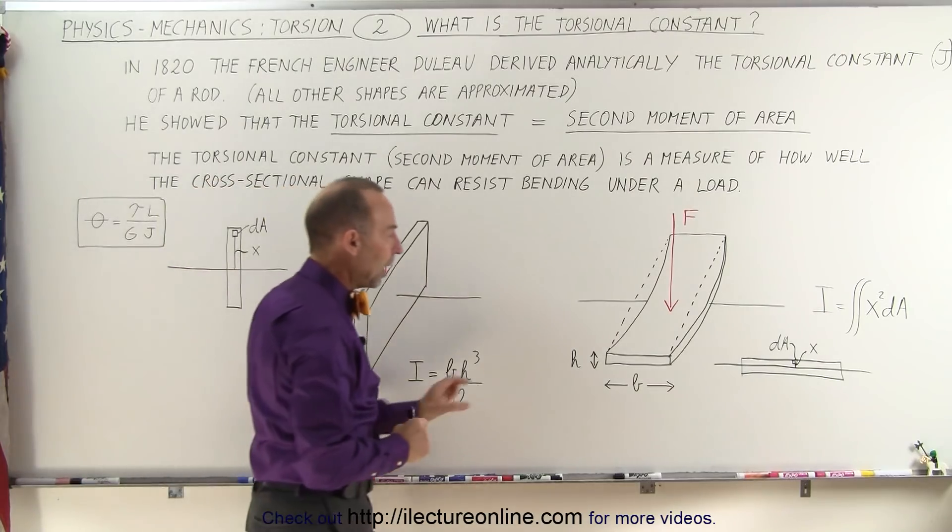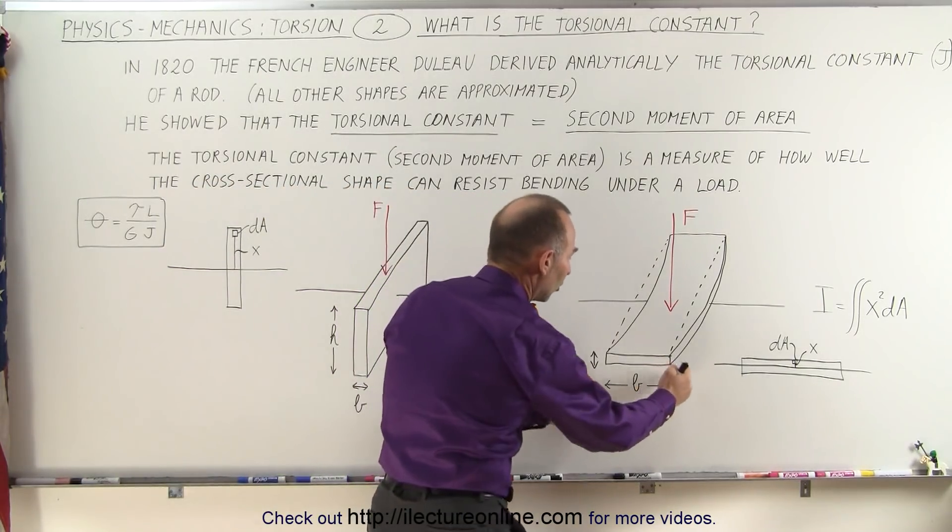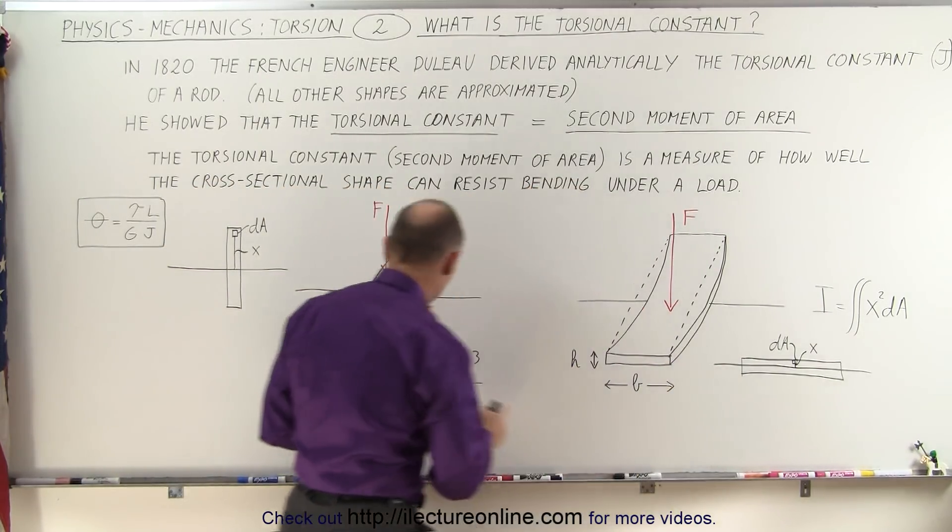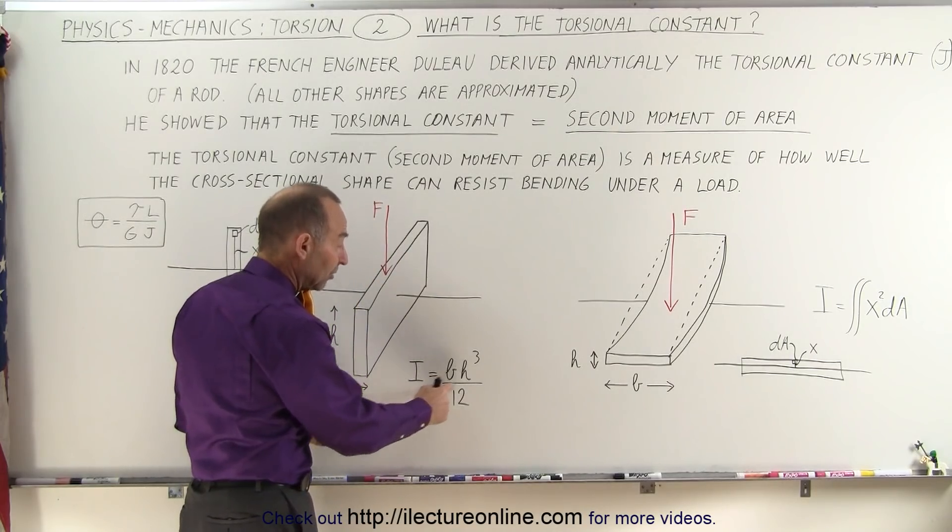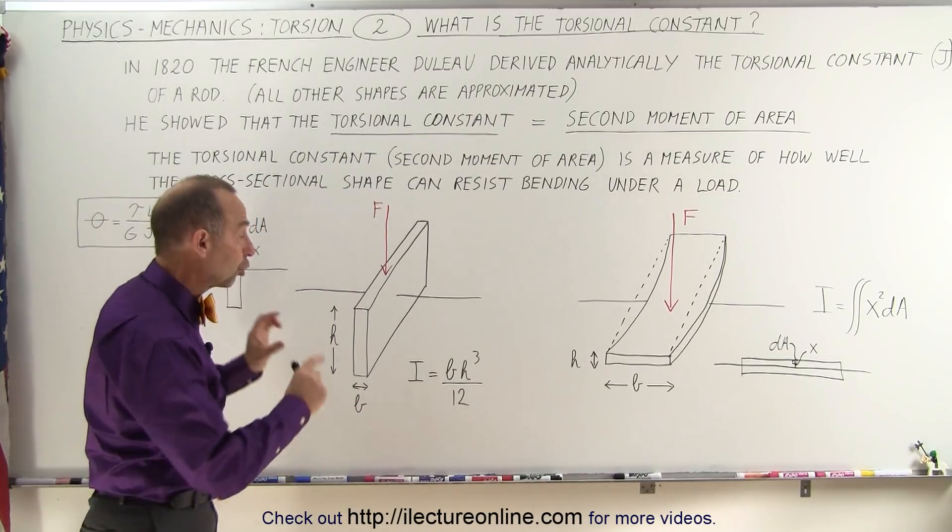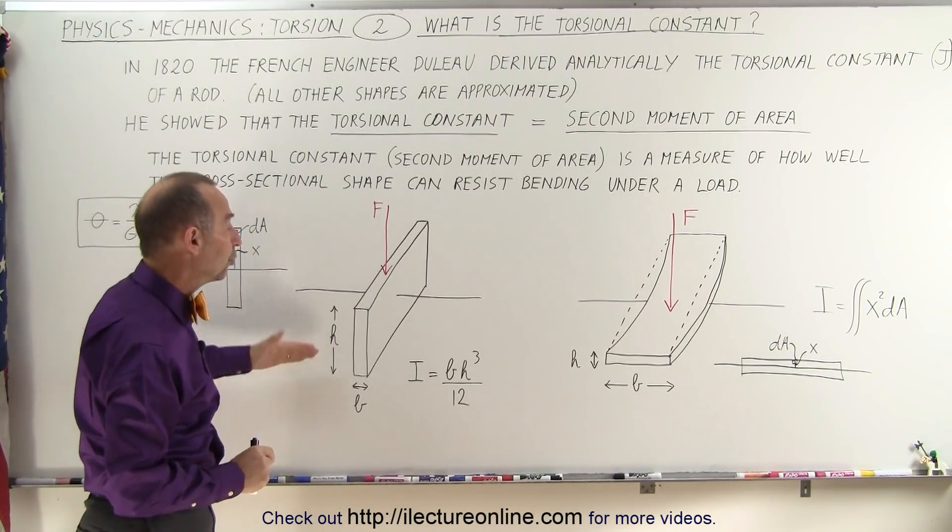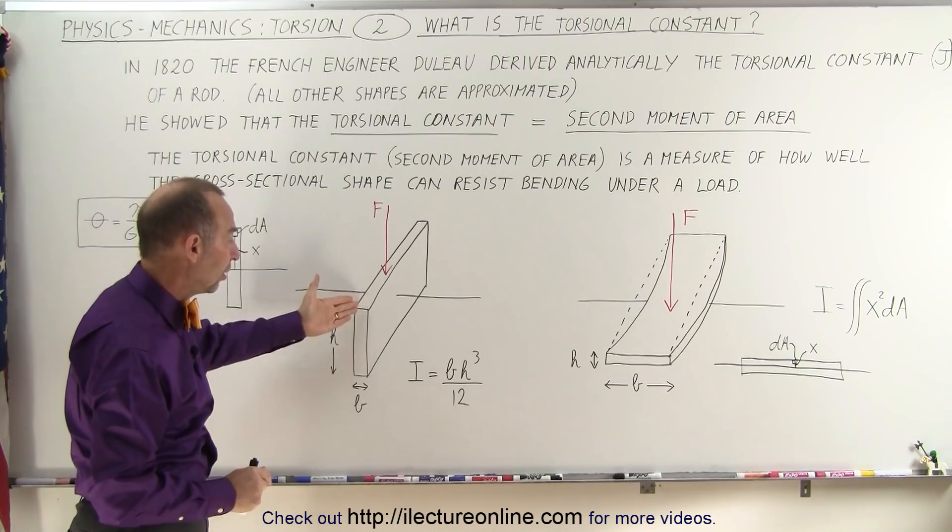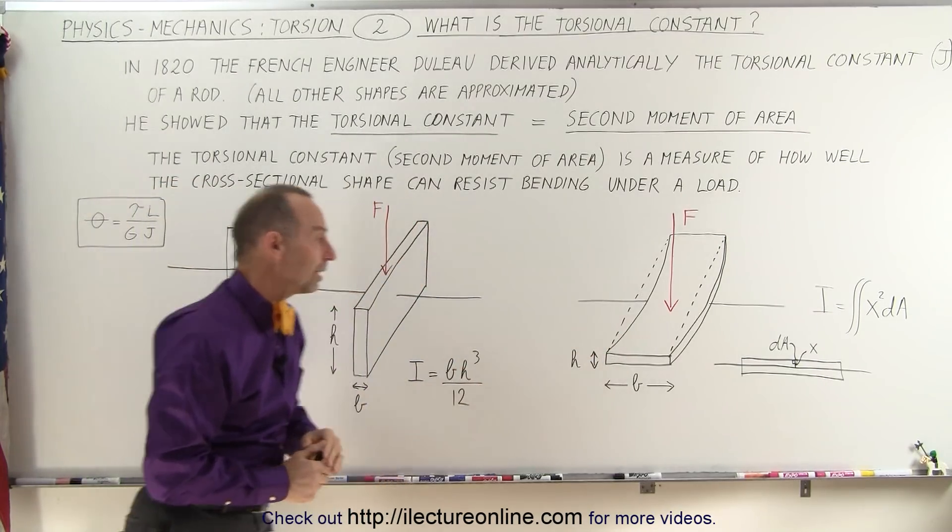If we lay the board flat, now H is a small quantity, B is a large quantity, and you can see that if we come up with the same calculation, since H is very small and cubed, you can see that I would be a lot smaller. There's a huge difference in the ability to resist bending when the board is laid like this or when it's sitting like that.